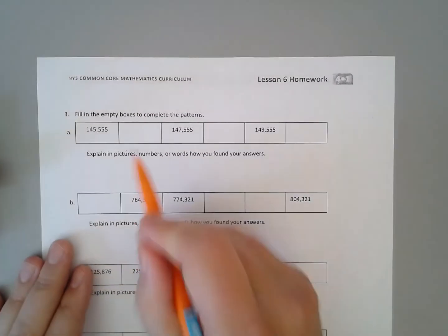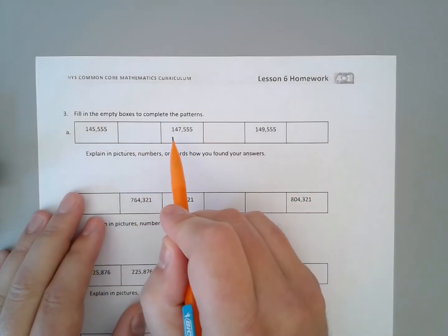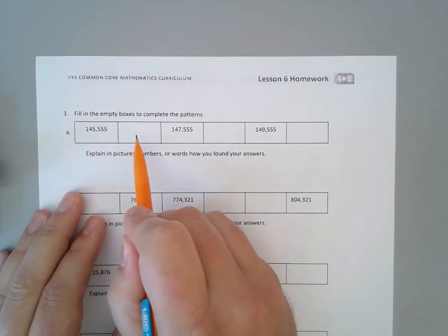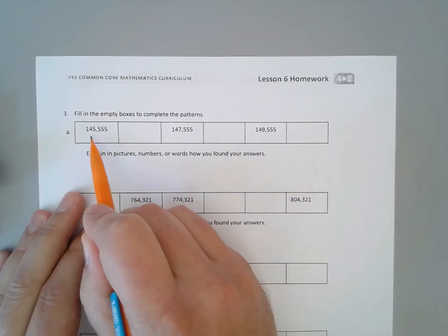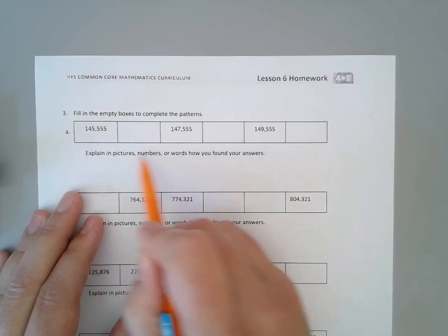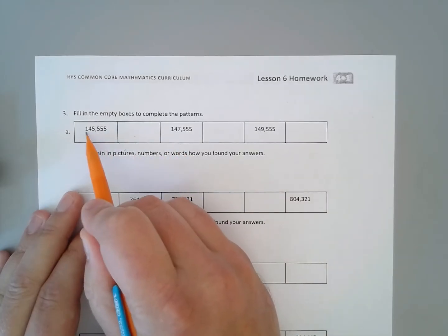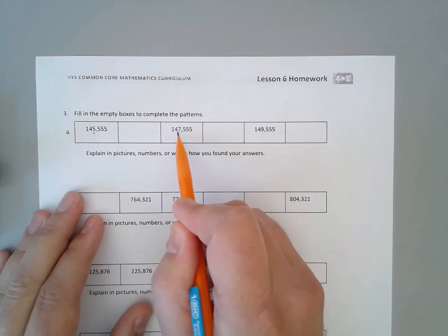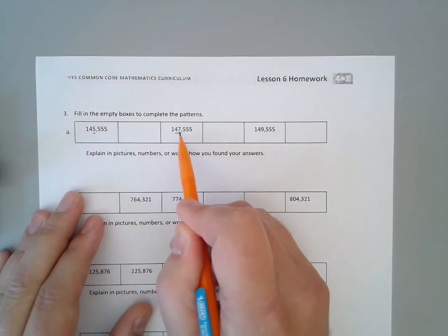On the back, we are filling in the boxes to complete a pattern. So we need to find the number here, here, and here. If we are going up two boxes, the number that's actually changing is in our thousands. And we're going from 5,000 to 7,000.